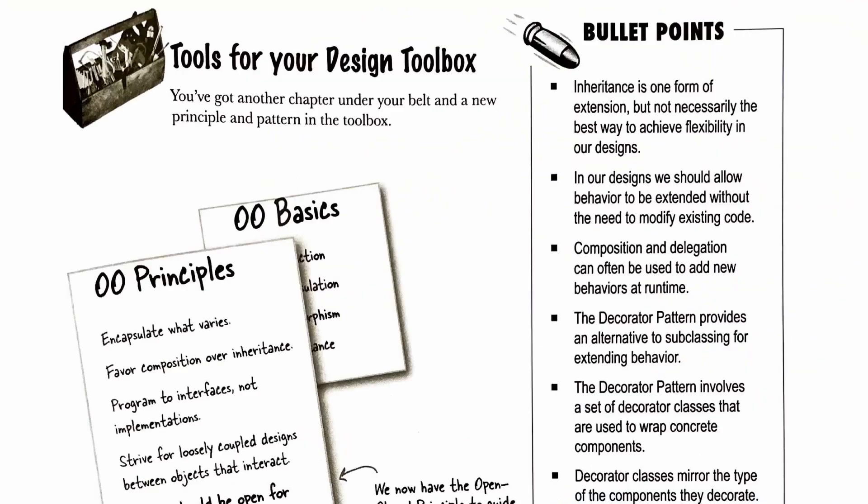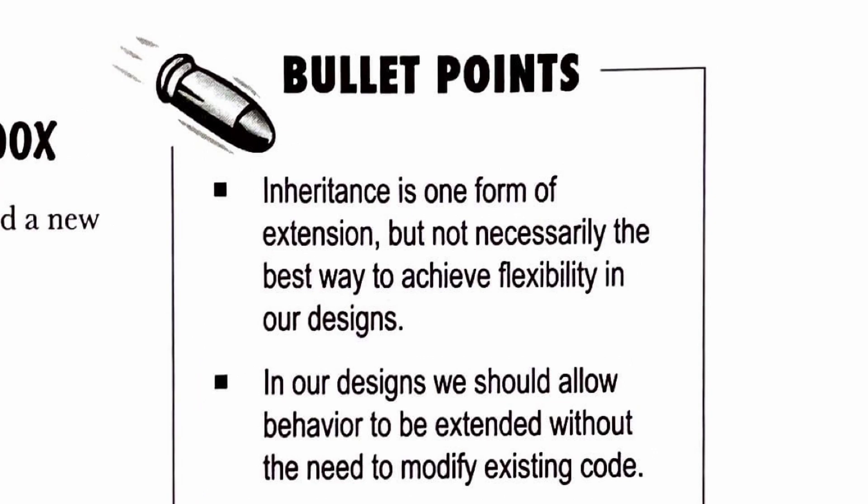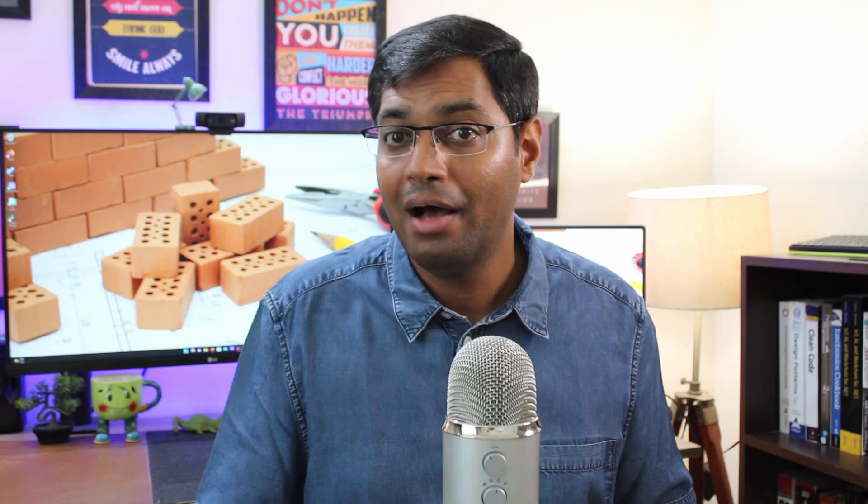Also recapped at the end of each chapter is a list of all design principles learned so far — a good way to recap new principles and not forget the old ones. A bullet point summary of that chapter is also included. I found these to be really, really helpful. If I were to revisit the book, each chapter's bullet points would be my first stop. And finally, there are exercises — lots and lots of them. Unlike many other books, these exercises are actually fun to do and hard to miss. I highly recommend readers attempt them and cross-check their solutions at the end.